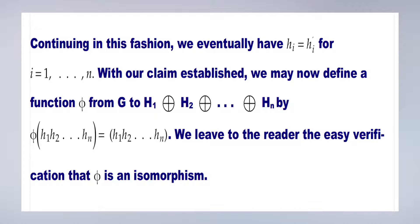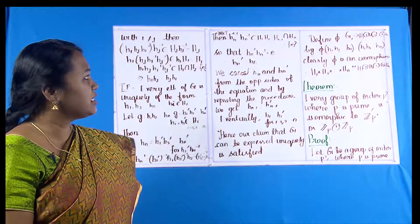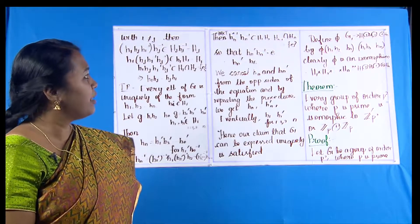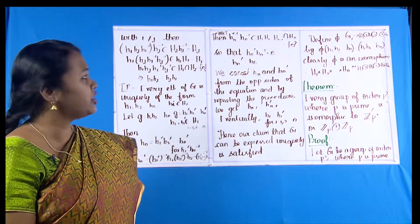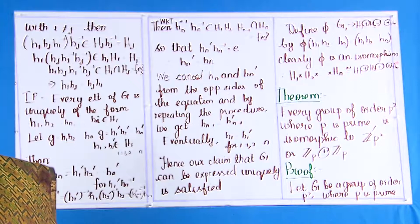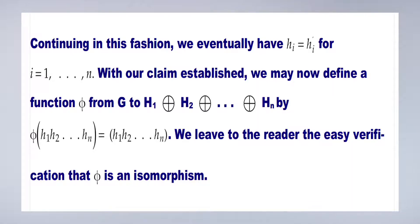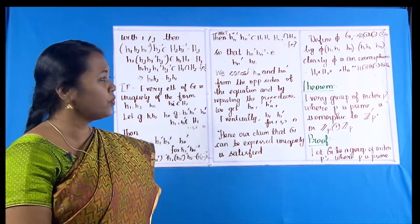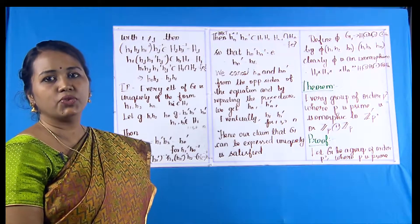Now define a map φ: G → H₁ ⊕ H₂ ⊕ … ⊕ Hₙ by φ(h₁h₂…hₙ) = (h₁, h₂, …, hₙ). Clearly φ is an isomorphism. Therefore H₁ ×(internal) H₂ × … × Hₙ is isomorphic to the external direct product H₁ × H₂ × … × Hₙ. This statement holds specifically because H₁, …, Hₙ are subgroups.